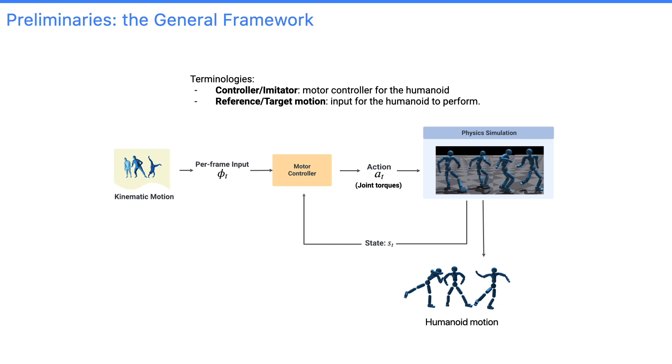In this work, we mainly study the motion imitation problem. A controller, given kinematic pose as input, needs to produce joint torques to drive a humanoid. And since physics simulators are usually not differentiable, this requires reinforcement learning.